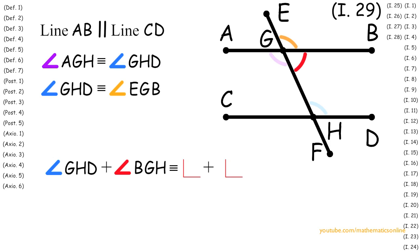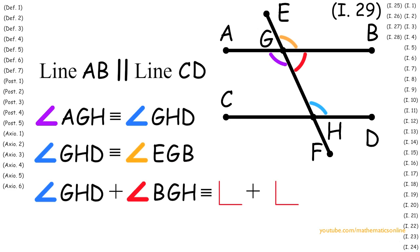Therefore, we have proven that if two parallel lines are intersected by a third line, then the alternate interior angles are congruent, the exterior angle is congruent to the opposite interior angle, and the sum of two interior angles on the same side are congruent to the sum of two right angles.